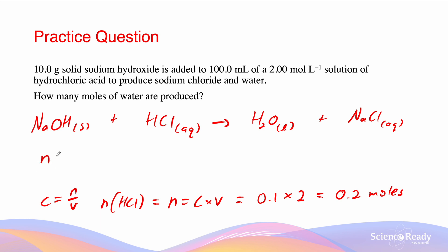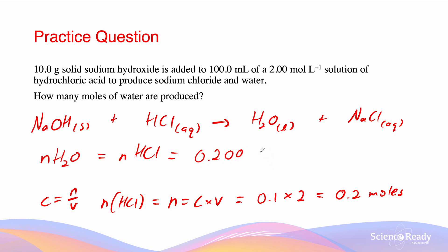Since the number of moles of water is equal to the number of moles of hydrochloric acid, because they are in a 1 to 1 ratio, the number of moles of water is also 0.2 moles. However, we need to express it as 0.200 moles to give our answer to 3 significant figures, which is the least number of significant figures given in the question.